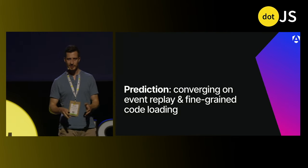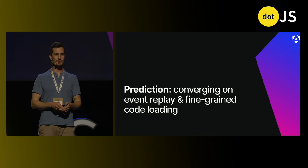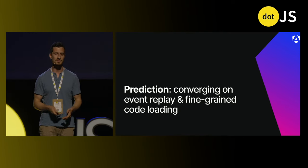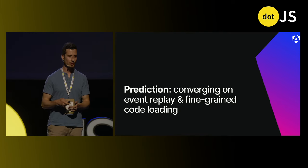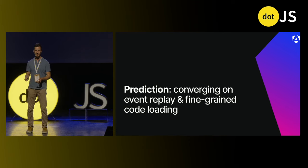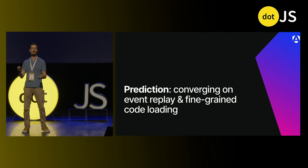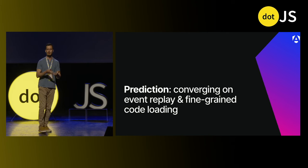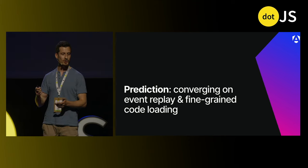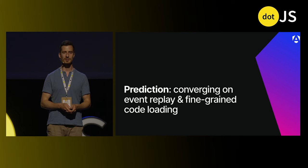So we've talked about convergence on signals and reactivity, and we discussed convergence on view structure and touched on dependency injection or context API. I have a prediction that we'll also be converging on event replay and fine-grained code loading — by fine-grained code loading I mean resumability, partial hydration, or the island architecture that Astro has been advocating for lately. Let me start talking about convergence on event replay.